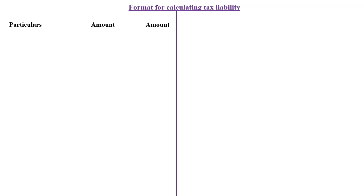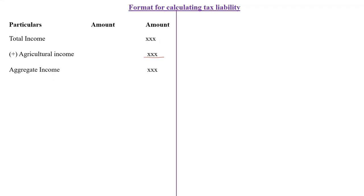Now let us see the format of calculating tax liability. The first step starts with total income — if you don't know how to calculate total income, tutorials are available in the YouTube channel. With this total income, the first step is to add agricultural income. If you have agricultural income in the question, we will add it; if you don't have agricultural income, you can skip this step.